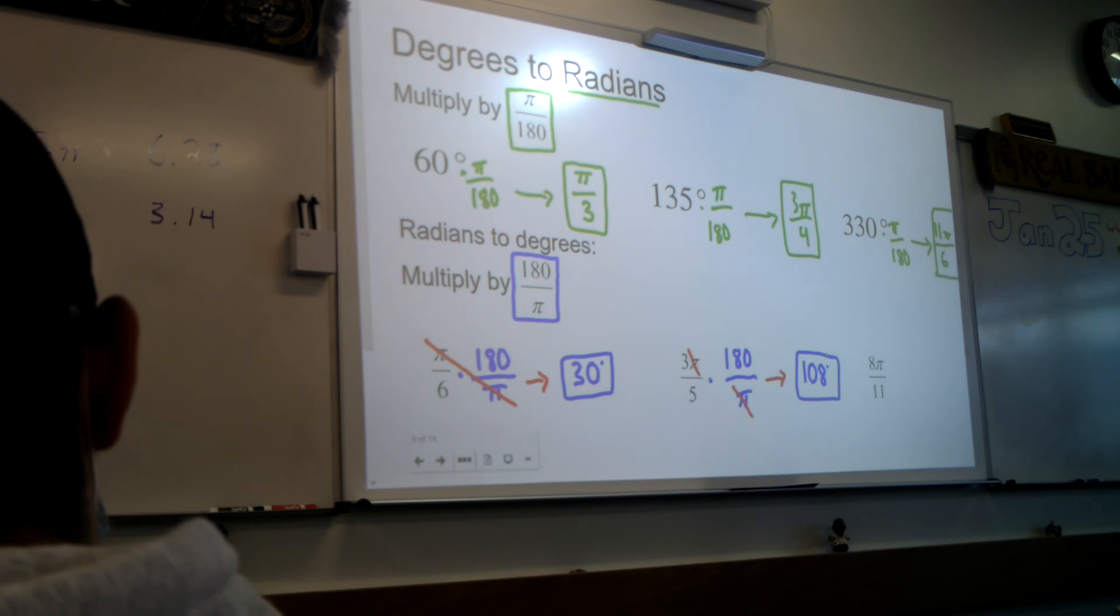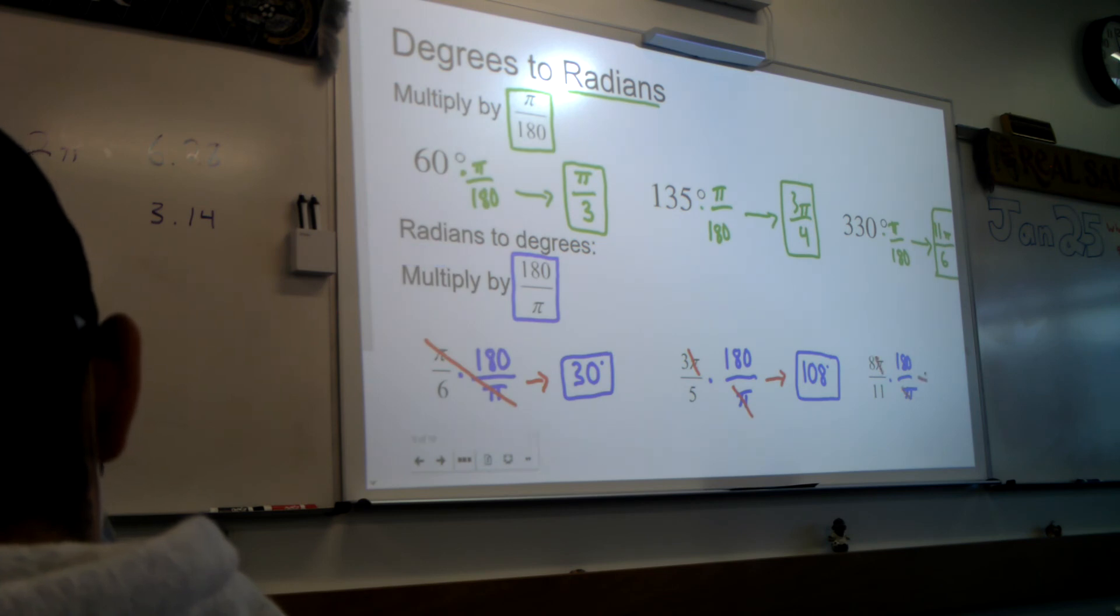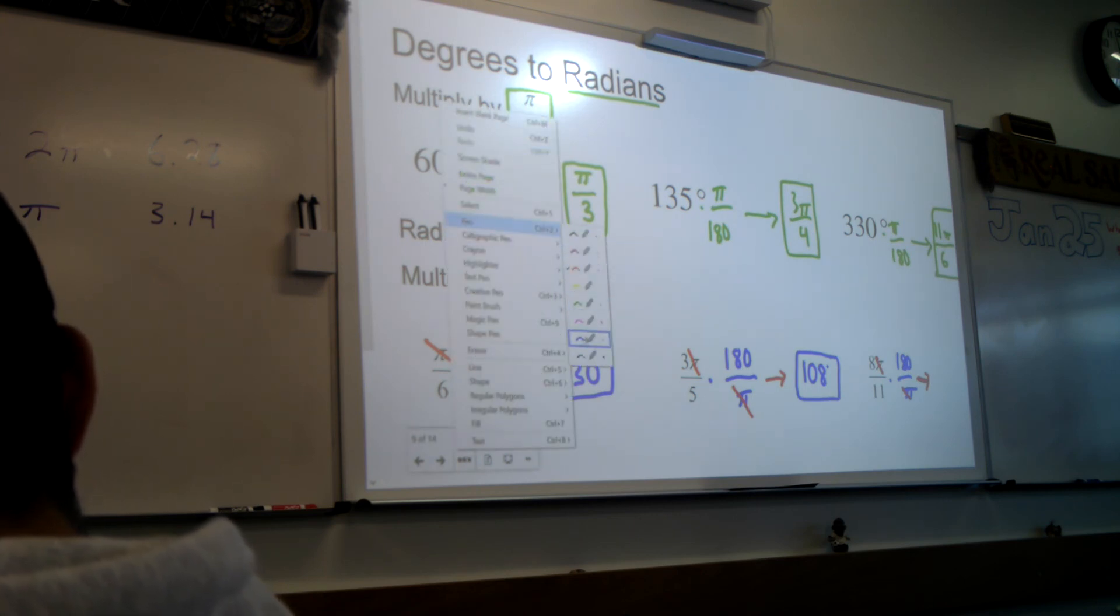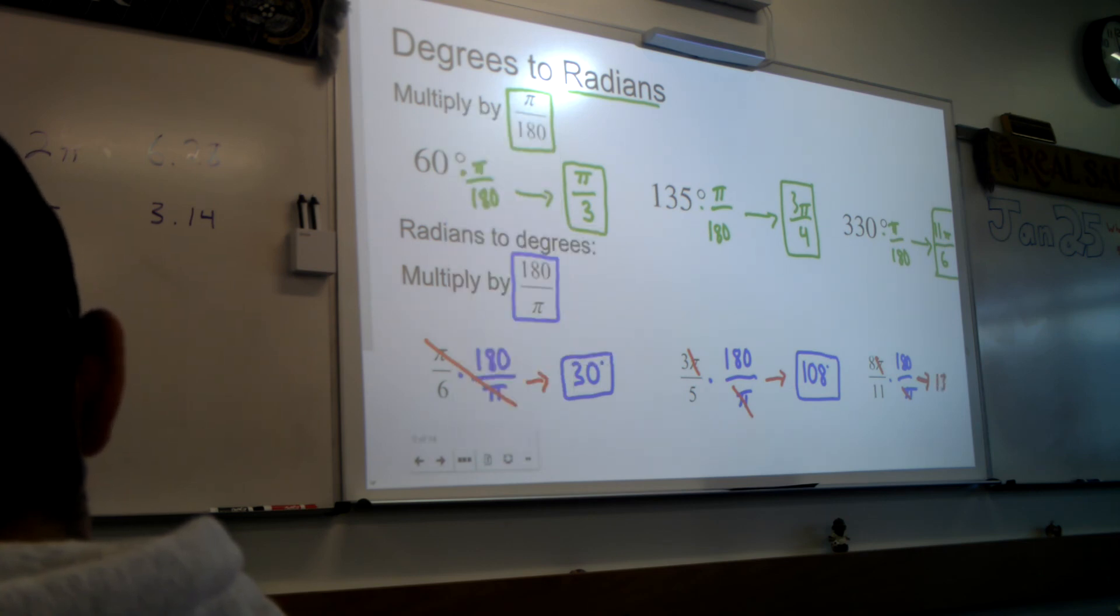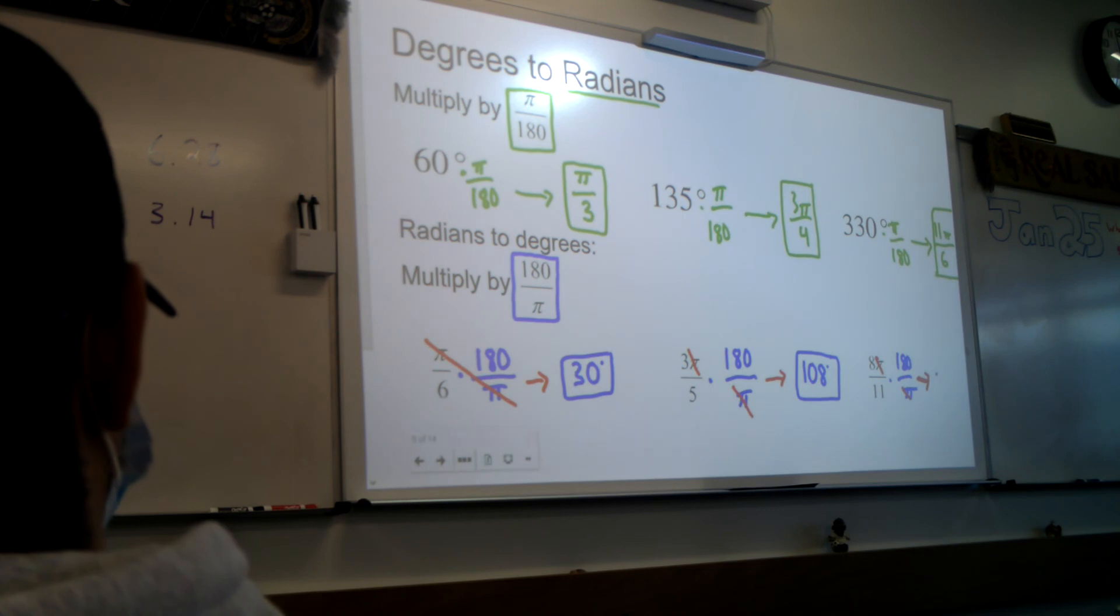Because 3 times 180 is 540, and 540 divided by 5 is 108. Now it won't always work out perfect. For example, here on 8π elevenths, I'm going to times by 180 over π. And the πs are going to cancel, but the numbers aren't going to be quite as nice as they were before. So on my calculator I do 180 times 8, and then I divide that by 11. And what do you guys get when you do that? 130.9. Yeah, that's what I got too. 130.9. And notice that's in degrees. So that's how many degrees 8π elevenths is.